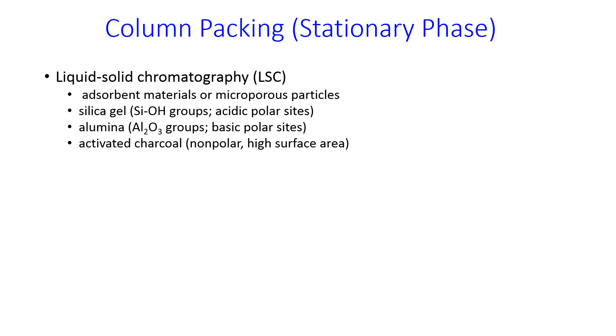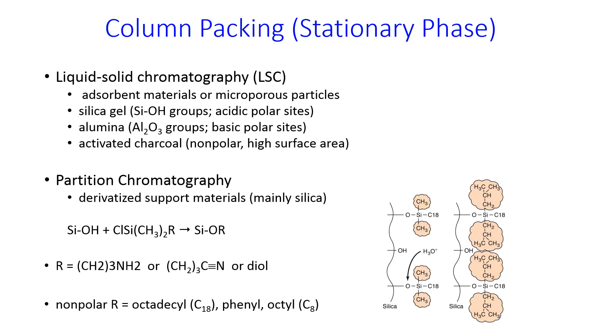In any case, inside the column is the column packing, which is the stationary phase. And so you can either do liquid solid chromatography or you can do partition chromatography. And the difference is the identity of this solid phase. In either case, these are packed columns. And so you have very small, ideally reproducible particle size. The idea of that is to reduce the terms in the Van Deemter equation that lead to band broadening. I'll show you the equation in a minute.